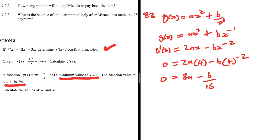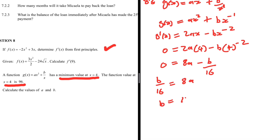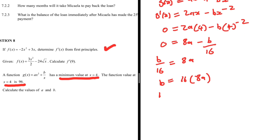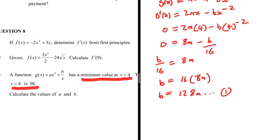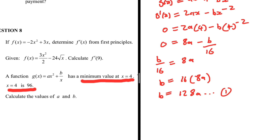From 0 = 8a - b/16, we make b the subject: b/16 = 8a, so b = 128a. We let that be equation one. We'll use the second piece of information to form equation two and then solve simultaneously.